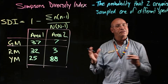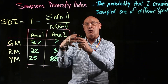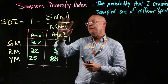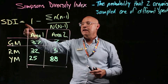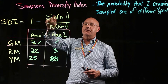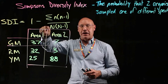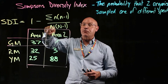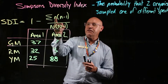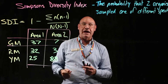Because it's a measure of biodiversity, it considers both the number of organisms and the number of species. This is the formula: SDI equals one minus the sum of n(n minus one), divided by capital N(capital N minus one). So what does lowercase n and capital N mean?